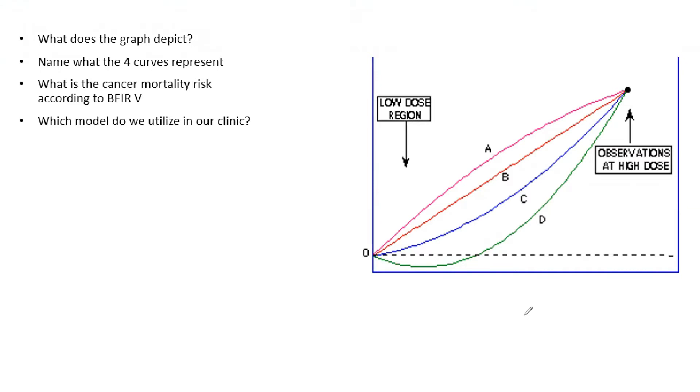Hopefully after reading radiobiology or even Khan, you could recognize that this is essentially a low dose cancer risk model graph. On the bottom here we have dose, and on the y-axis we have cancer induction risk.